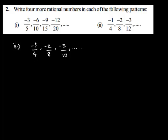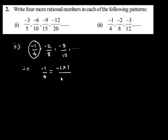In this pattern, negative 1 upon 4 is in its lowest term. That is, negative 1 upon 4 can be written as negative 1 multiplied by 1 upon 4 multiplied by 1. Then the second term, negative 2 upon 8, can be written as negative 1 multiplied by 2 upon 4 multiplied by 2.